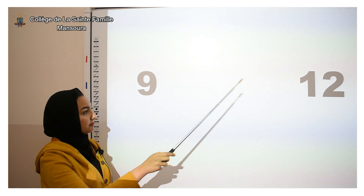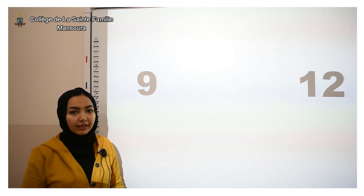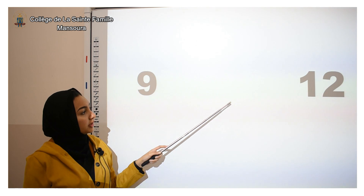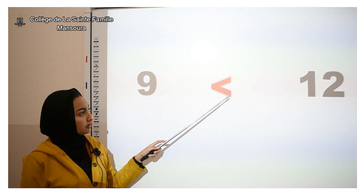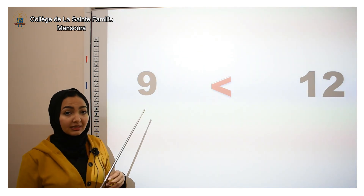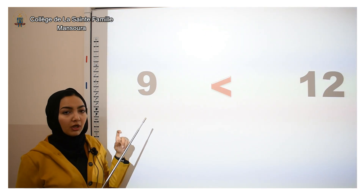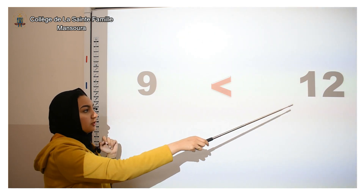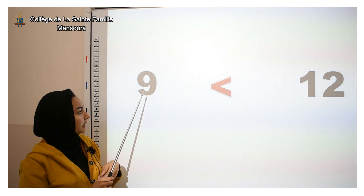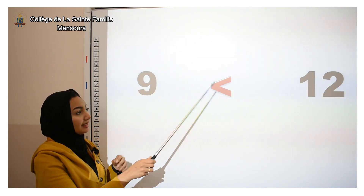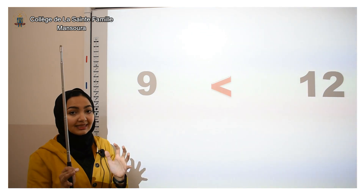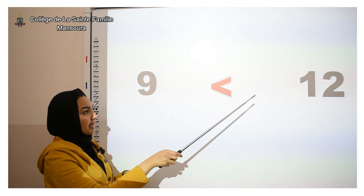Nine and twelve — which one is greater, which one has more? Yes, twelve. So Mr. Alligator is going to eat the group of twelve. But how can we read this? This time we start with the smaller number, because nine is smaller than twelve. We read this like: nine is less than twelve.